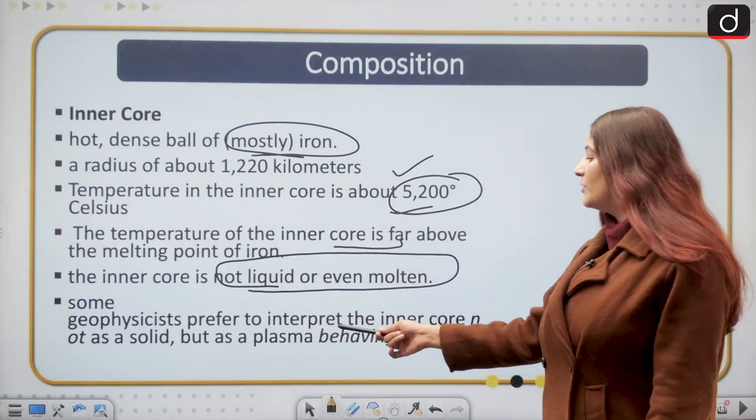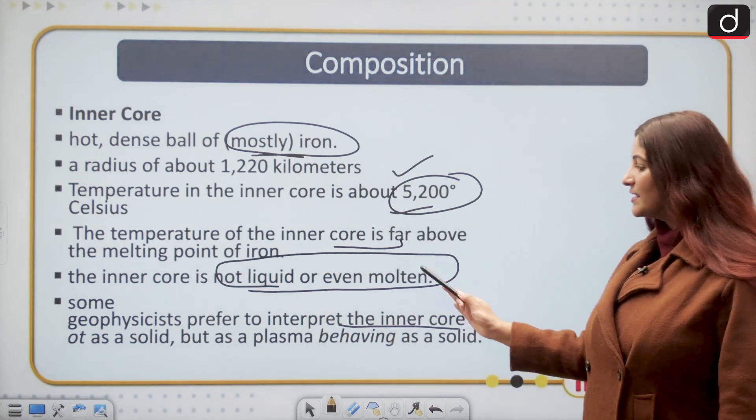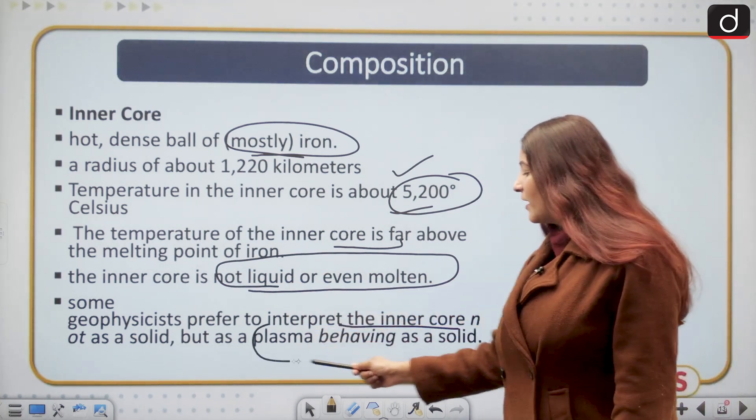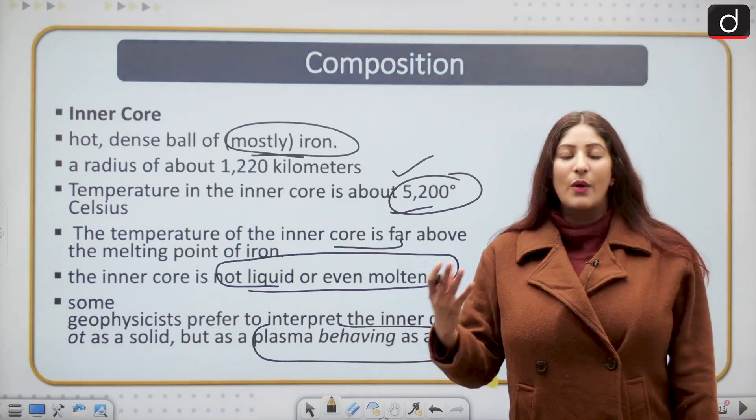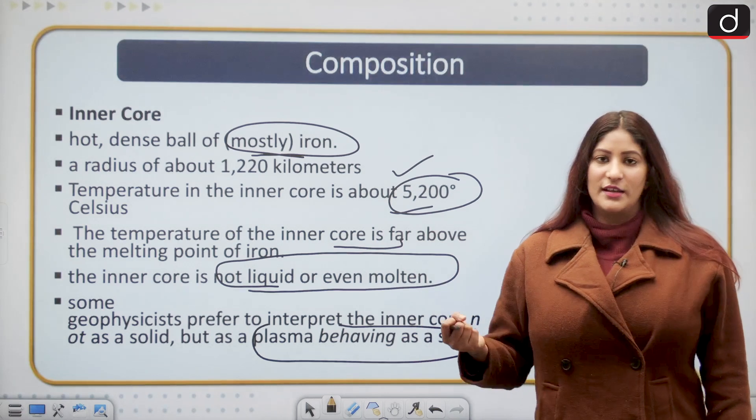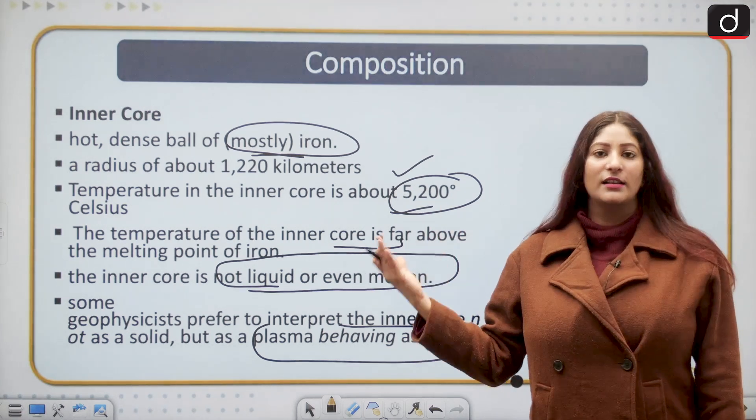Some geophysicists prefer to interpret the inner core not as a solid but as a plasma which behaves as a solid. So you have to remember that it is solid in nature. Why is inner core solid in nature and not like the outer core?